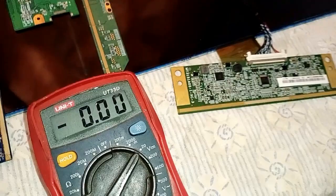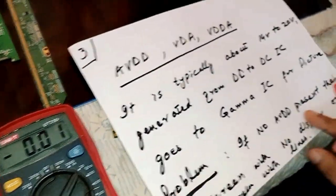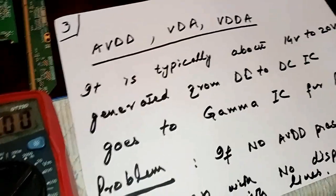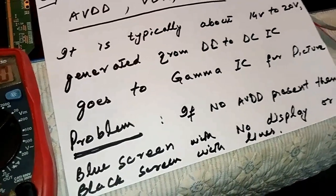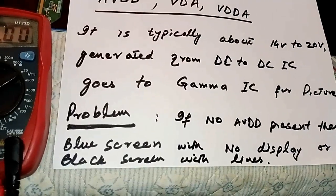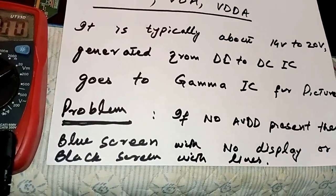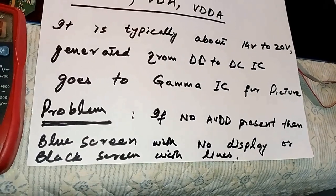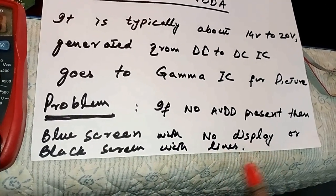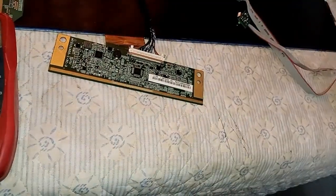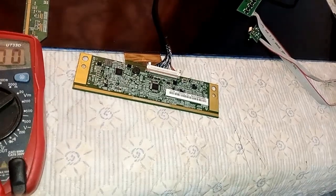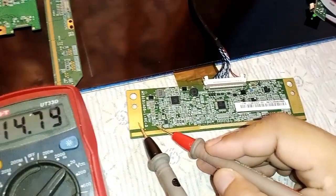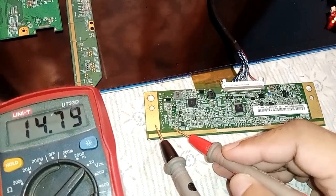The next voltage is AVDD, also called VDA or VDDDA in some panels. It is typically about 14V to 20V, generated from the DC-to-DC IC and goes to the gamma IC for picture. If AVDD is not available, the problem is a blue screen with no display, or a black screen with lines. The meter shows approximately 14.8V.